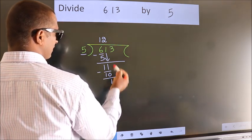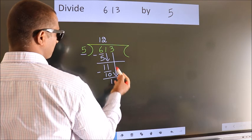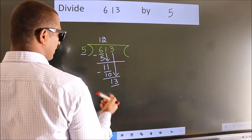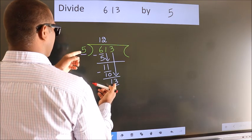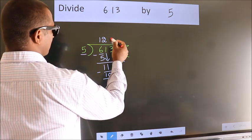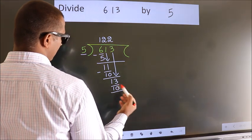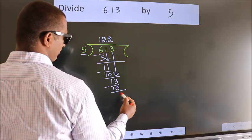After this, bring down the beside number. So bring down 3, making 13. A number close to 13 in the 5 table is 2 times 5 equals 10. Now we subtract. We get 3.